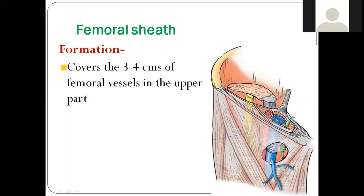How is the roof formed? By the superficial fascia. What is the deep fascia of the thigh called? Fascia lata. What are the modifications of fascia lata? The iliotibial tract, saphenous opening, cribriform fascia, and intermuscular septa.